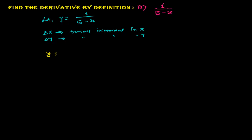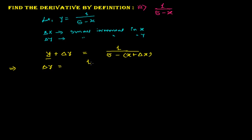So my equation is now going to change: y plus delta y equals 1 over (5 minus x plus delta x). In the next step, I keep delta y on the left side and transfer everything else to the right side, so delta y equals 1 over (5 minus x plus delta x) minus y.